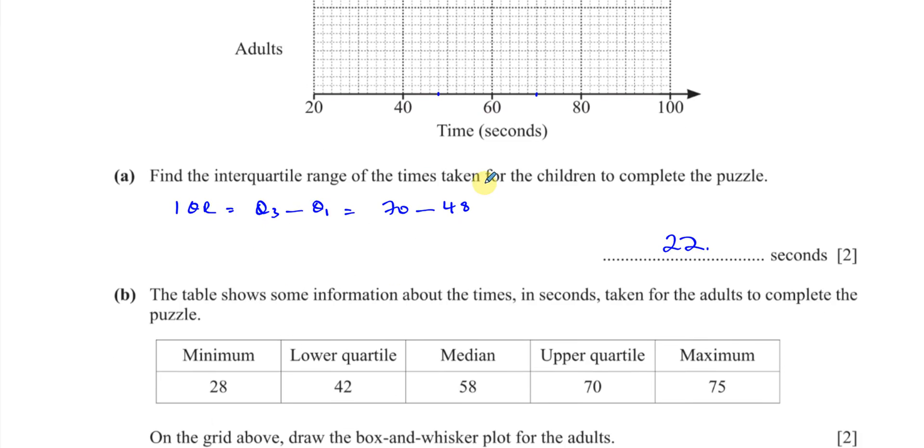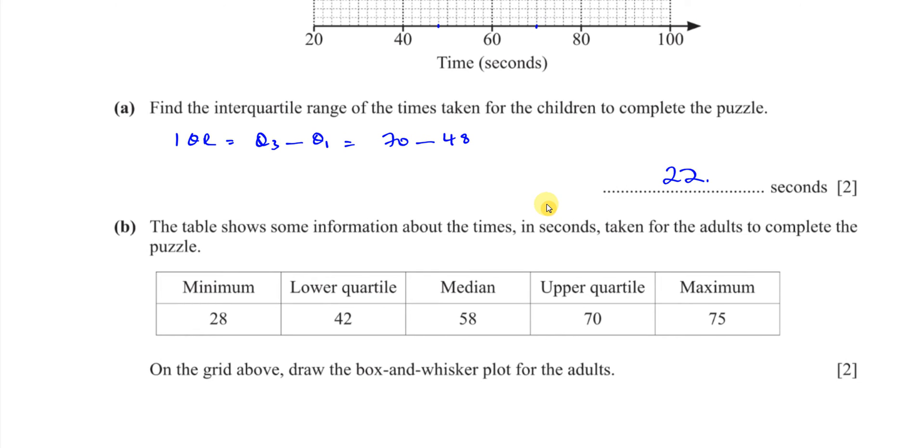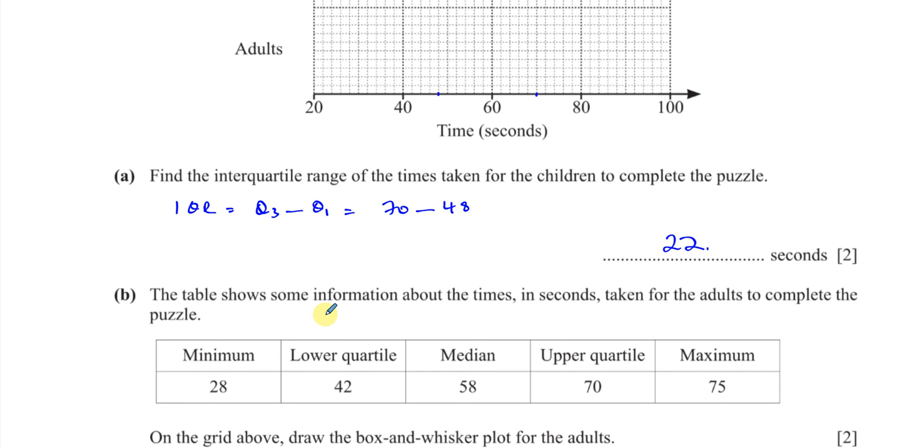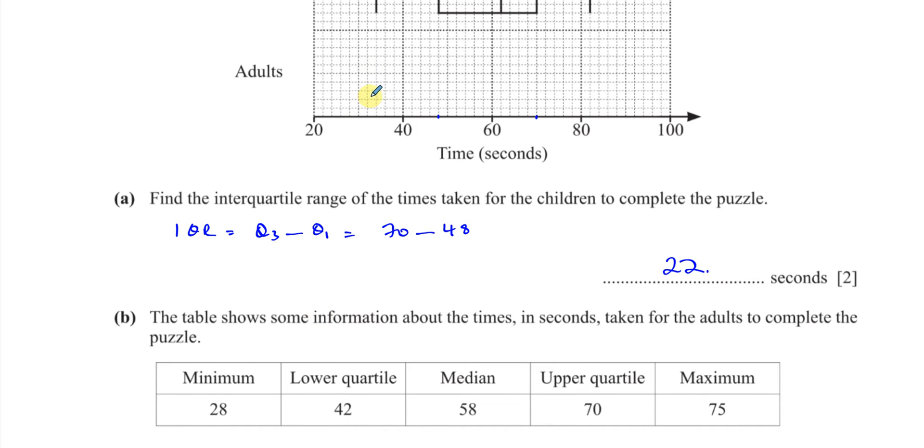Now, then it says the table shows some information about the times in seconds for the adults to complete the puzzle. On the grid above, draw the box and whisker plot for the adults. So again, as I was mentioning, this is the lowest value. This is the lower quartile, the median, the upper quartile, and the maximum. So for the adults, this is the data. So the minimum is 28. So let's make the box and whisker plot here.